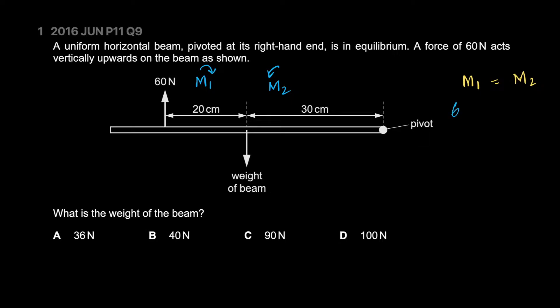M1 is 60 times the distance, which is 50, equal to the weight W times the distance 30. Solving this, we find that W, the weight, is equal to 100 newtons.